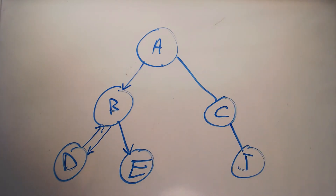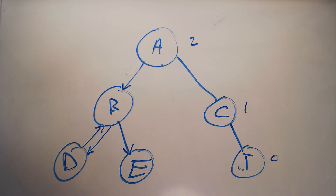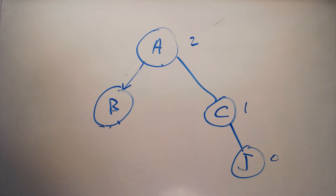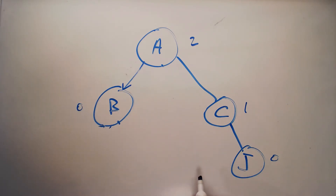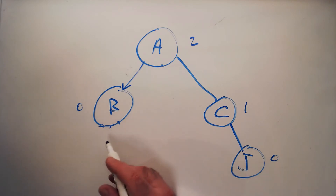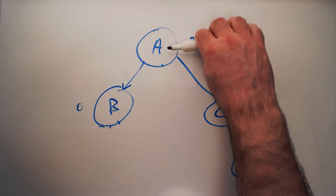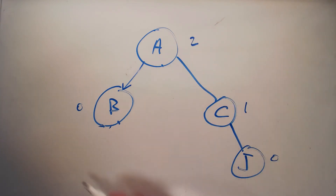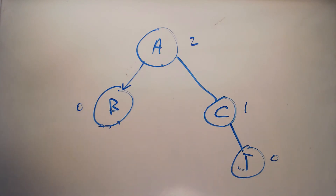Now let's talk about height — it just goes the other way around. The height of J is zero, the height of C is one, and the height of A is two. If we have a tree where B is a leaf, the height of B is zero — the height of any leaf is zero. The height of a tree is defined by the maximum height of any path, so the height of this tree is two. C and B are siblings with different heights.